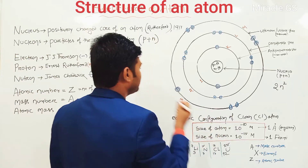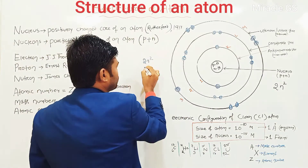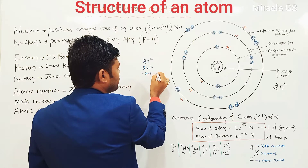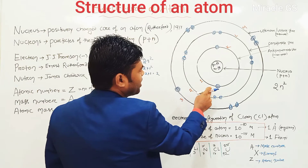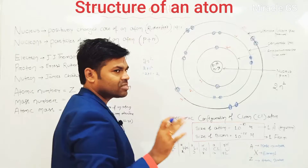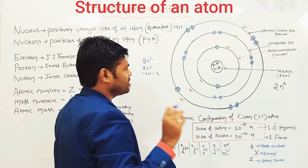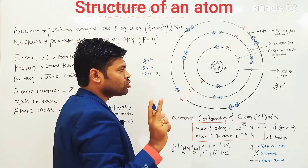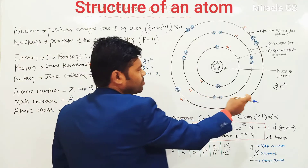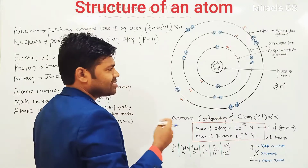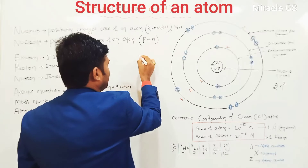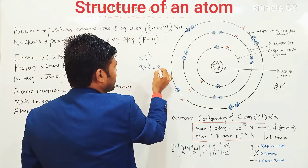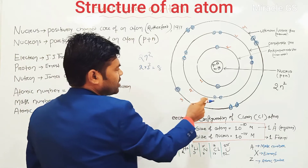The first inner shell — the formula is 2N squared. That means 2 into 1 squared is equal to 2 into 1 is equal to 2. So the first shell may have 2 electrons. Whatever may be the structure of atom of any element, there must be 2 electrons in the first shell, that is called K shell. The second shell may have how many electrons according to the principle of 2N squared? That is 2N squared is equal to 2 into 2 squared is equal to 8.